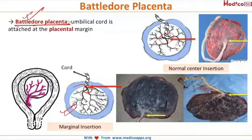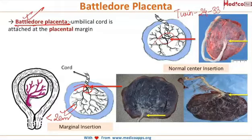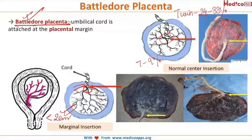The shortest distance between the cord insertion and the placental edge is less than 2 cm. The incidence of battledore placenta is more in cases of twin pregnancies, where it is around 24 to 33%, and in single term pregnancies the incidence is 7 to 9%. In most cases, battledore placenta is asymptomatic.